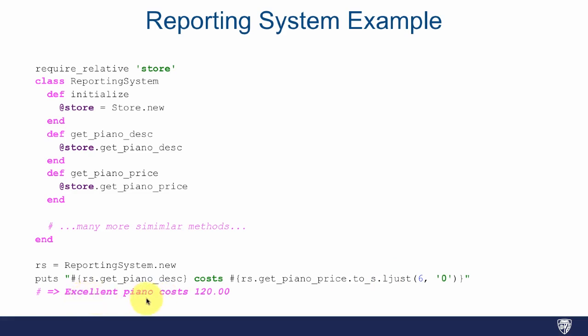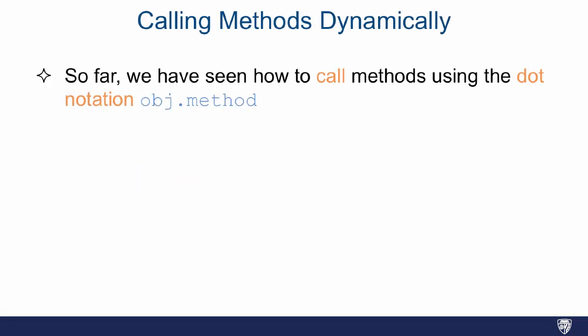Okay, but that's a lot of methods. The store already has all these methods, and all we're doing is just delegating to methods of the store: get_piano_desk, get_piano_price, and so on. And you have to have all these duplicate methods. So let's see how we could break it down and maybe improve it so that we could generate some code.